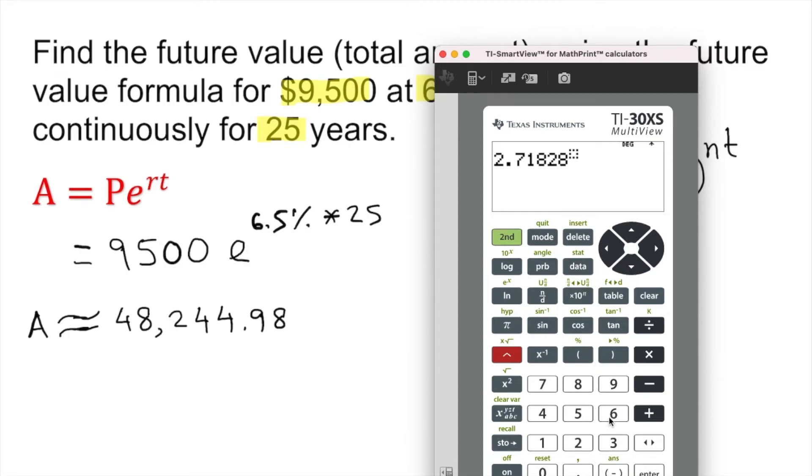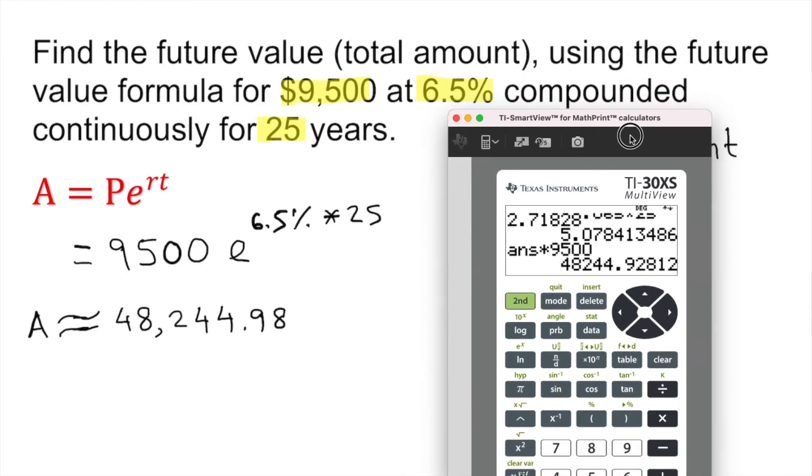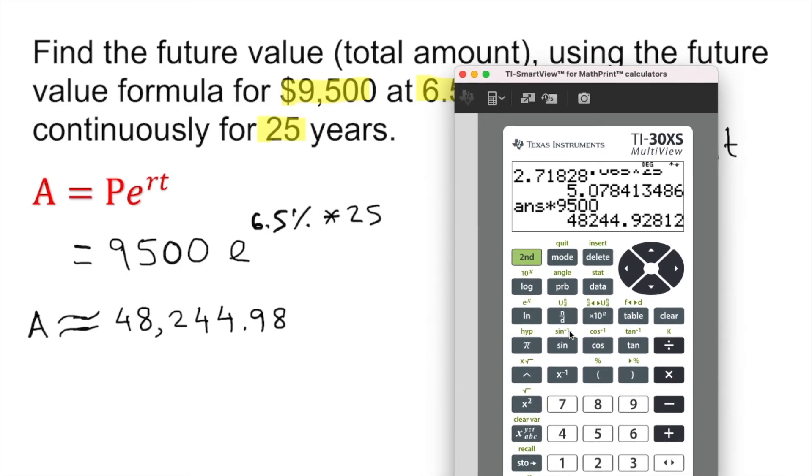6.5, or we can put it down as a decimal actually, 0.065 times 25, then enter, and then multiply by 9500. Bingo! This is exactly the same answer actually. So any calculator will work fine, but if we have this calculator, it is very friendly.